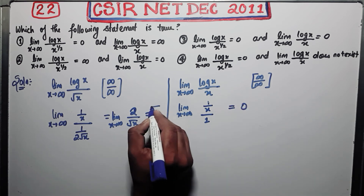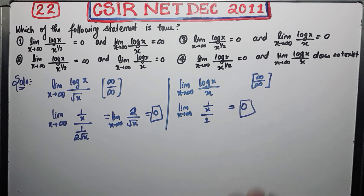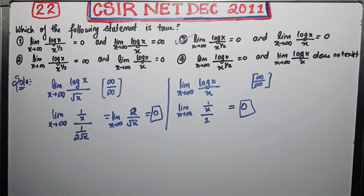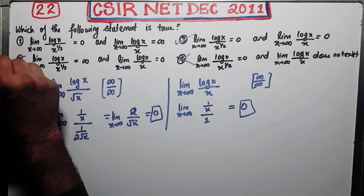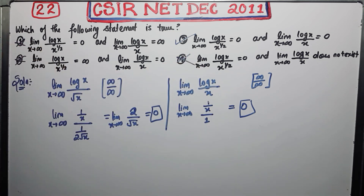So both answers are 0, therefore option C is correct. That means the third option is correct and the remaining options are false. This is a very easy question. Thank you guys.